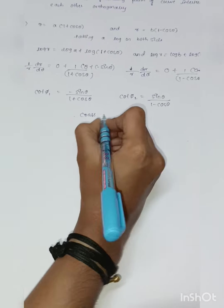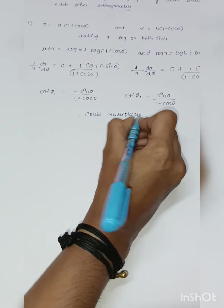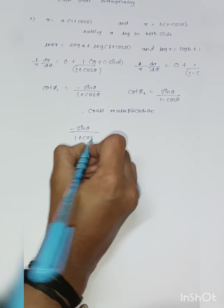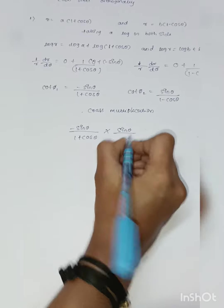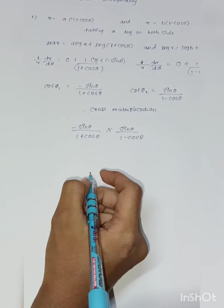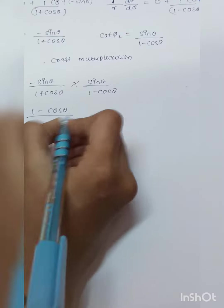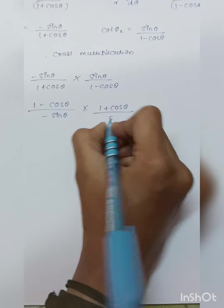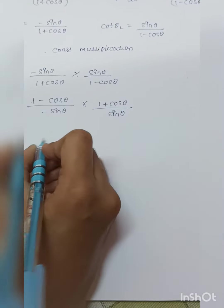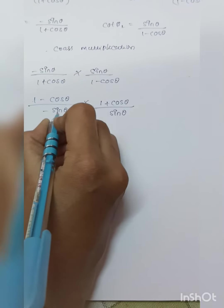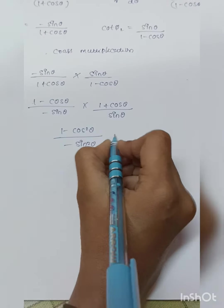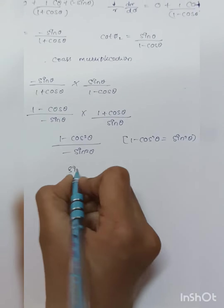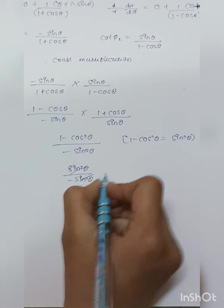By cross multiplication: cot phi₁ times cot phi₂ equals minus sin theta over (1 plus cos theta) multiplied by sin theta over (1 minus cos theta), which after cross multiplication gives (1 minus cos theta) over (minus sin theta) times (1 plus cos theta) over sin theta. This simplifies to (1 minus cos²theta) divided by (minus sin²theta). Since 1 minus cos²theta equals sin²theta, we get sin²theta divided by minus sin²theta, which equals minus 1. Hence the curves intersect orthogonally.